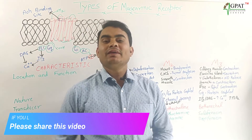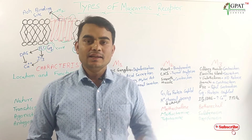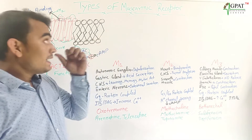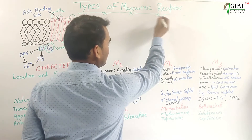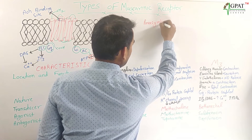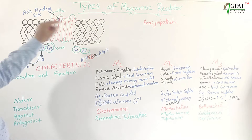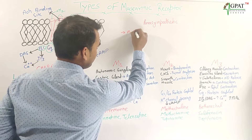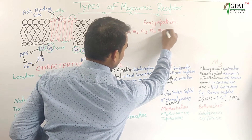Hello friends, welcome back to the pharmacology digester series. This next topic is types of muscarinic receptors. Muscarinic receptors are the parasympathetic receptors — they are classed under the parasympathetic receptors. There are mainly five types of muscarinic receptors: M1, M2, M3, M4, and M5.